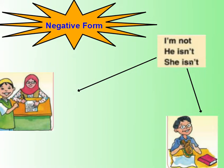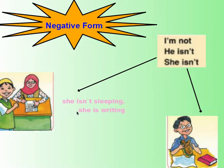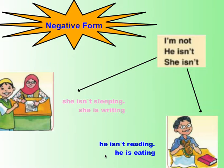Number one: She is not sleeping — she is writing. She is not sleeping. In negative form: she isn't sleeping; in affirmative: she is writing. Number two: He is not reading — he is eating. In negation: he isn't reading; verb plus ing: reading. He is not reading; he is eating.